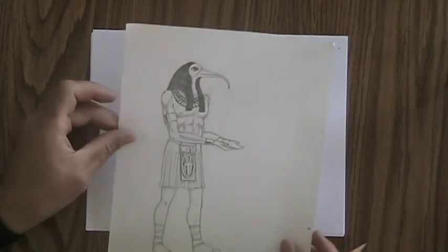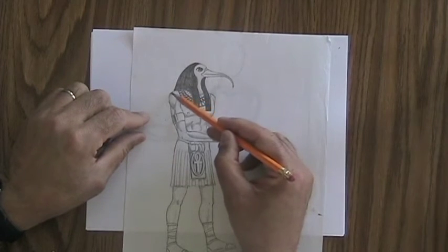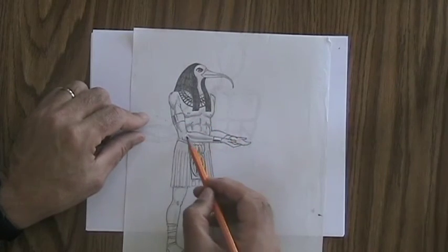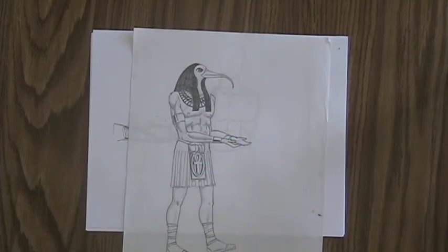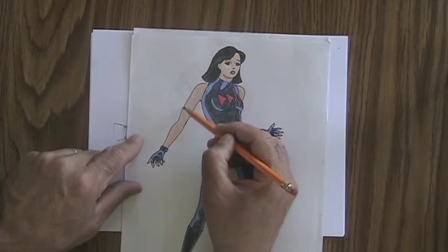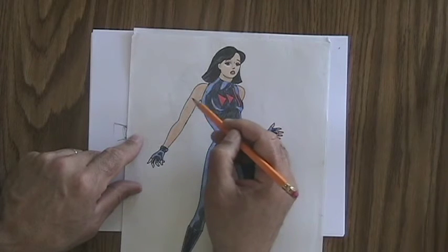You can see here on this picture that the muscles on this male figure are much more defined and harder than the muscles on this female figure. You don't really see much definition of her muscles, but you do see the shape of them.